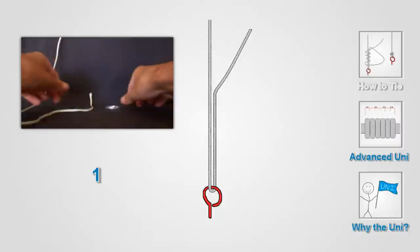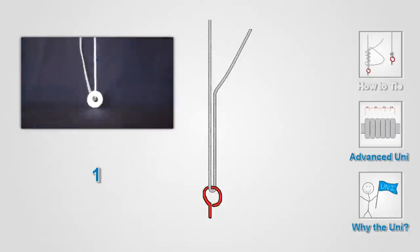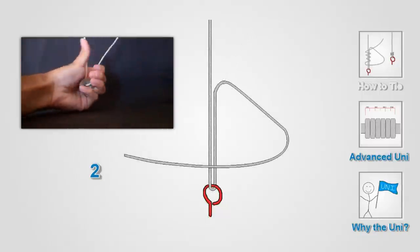Begin by running the end of your line through the eye of the hook. Then, turn the end of the line back towards the eye and form a loop.